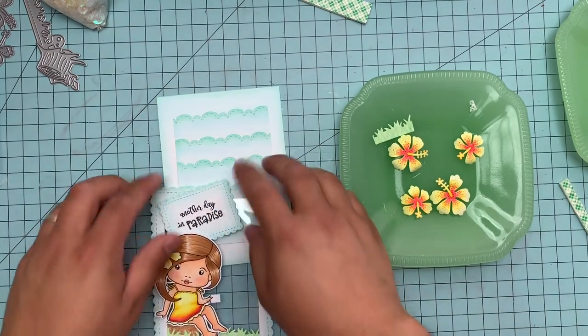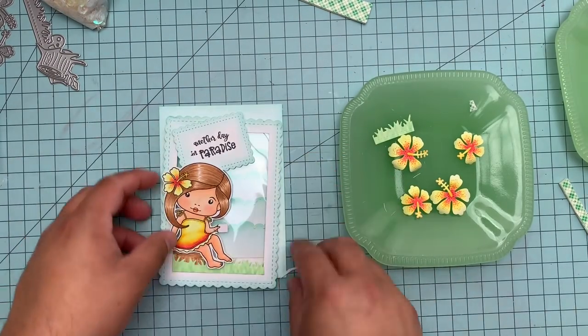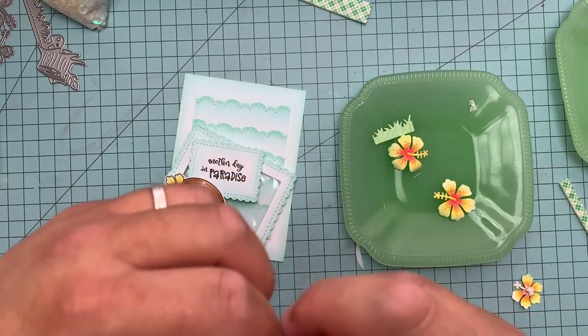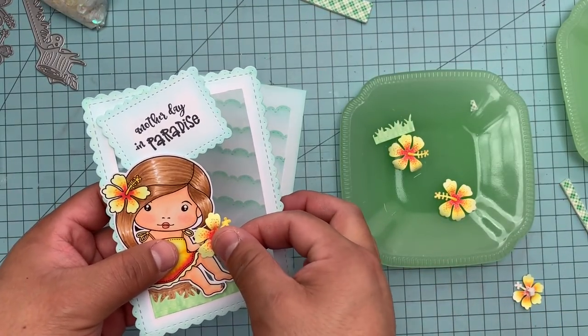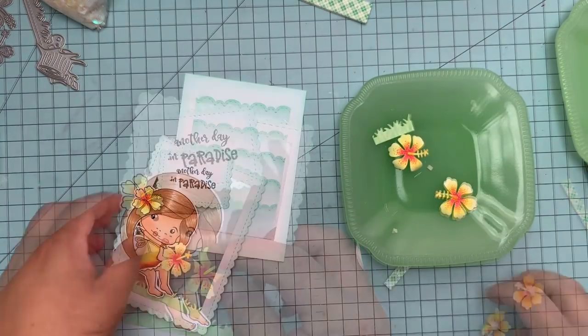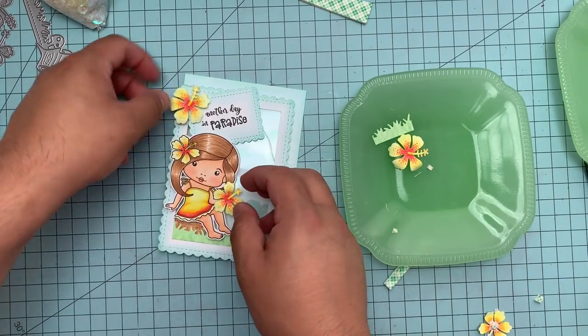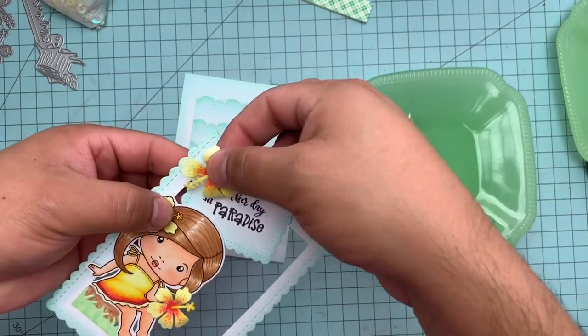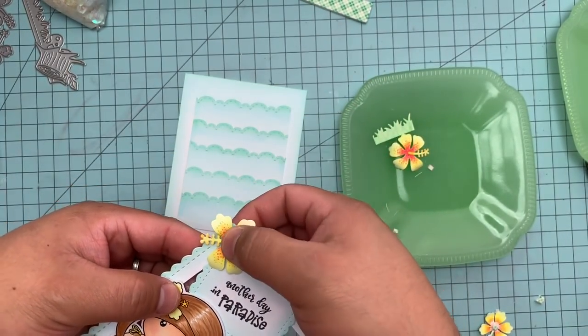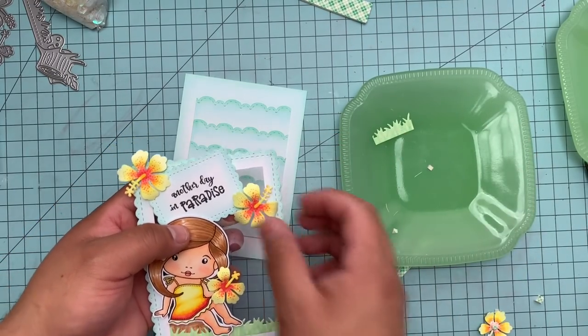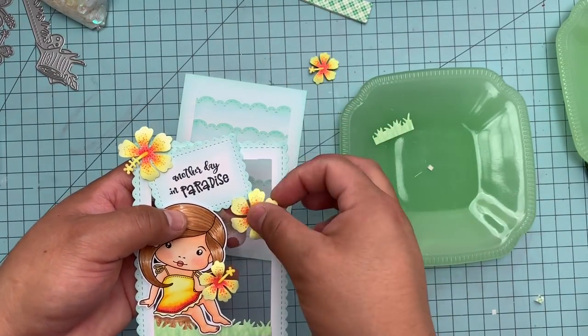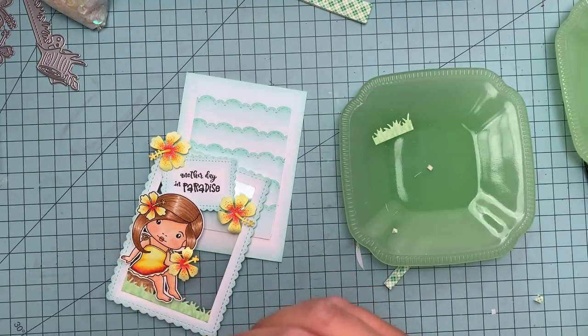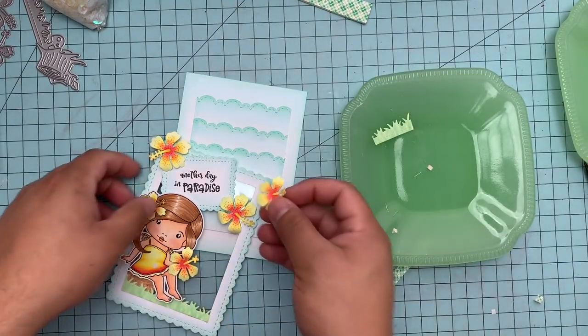This is why I like to do my images on the front first. I'm going to actually adhere it to the acetate. Now I'm going to add the other flowers. We're going to add these other flowers, little accent pieces. I have three all together so I'm just going to place them in different places.